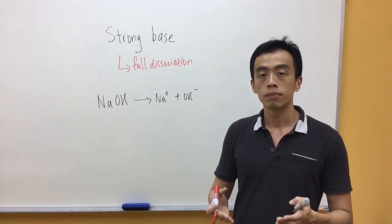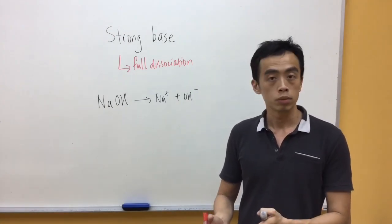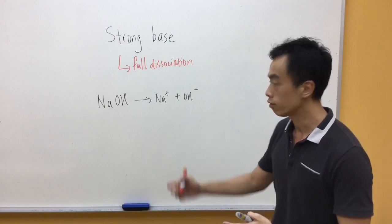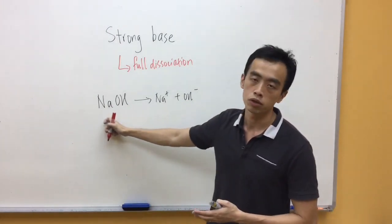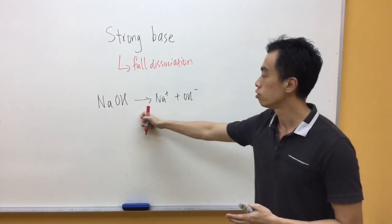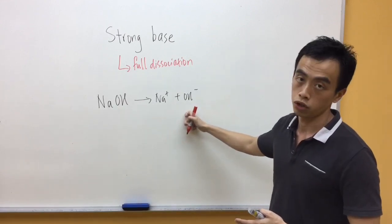If the concentration of my sodium hydroxide is 0.1 mol per dm cubed, then the concentration of OH minus will also be 0.1 mol per dm cubed, because 100% of my sodium hydroxide is dissociated into solution to form Na plus and OH minus.